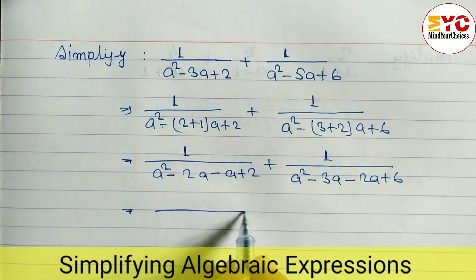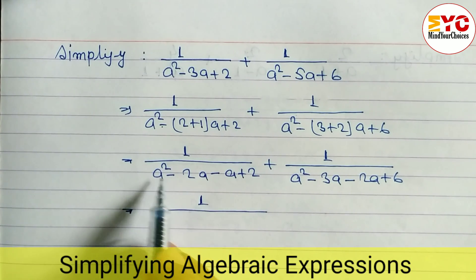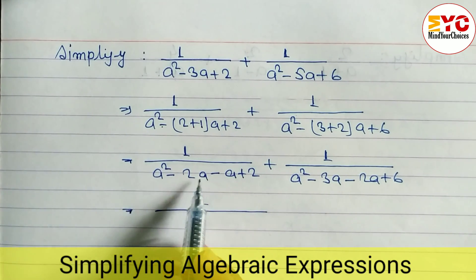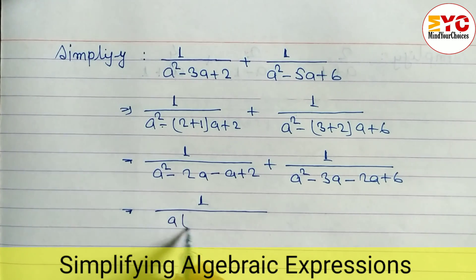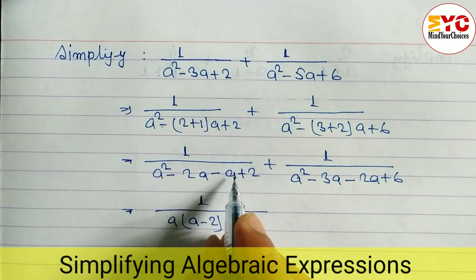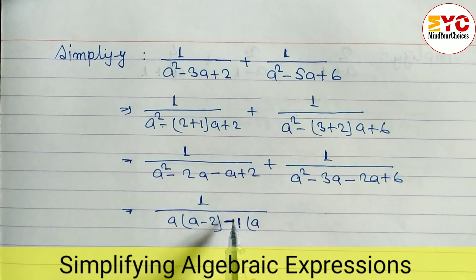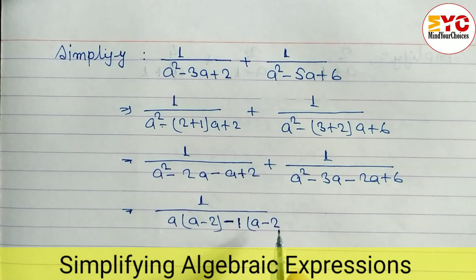Next we take common factors from the first two terms and the last two terms. From the first two terms, a is common, leaving a-2. From the last two terms, we take -1 as common, leaving a-2. When minus is common we change the sign, so plus becomes minus 2.